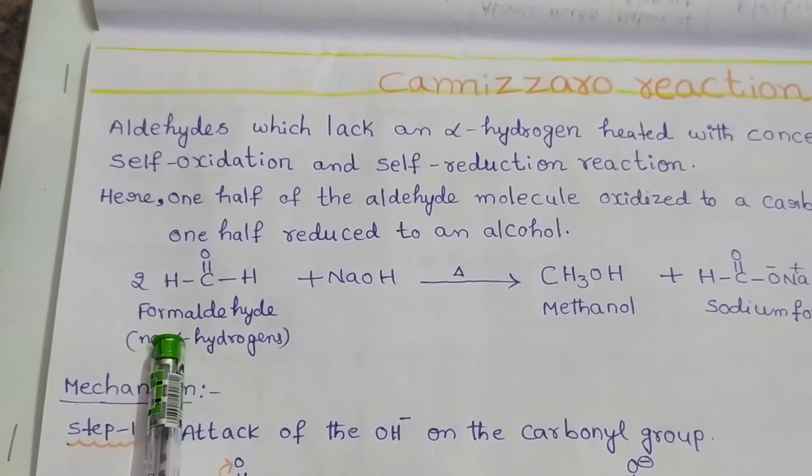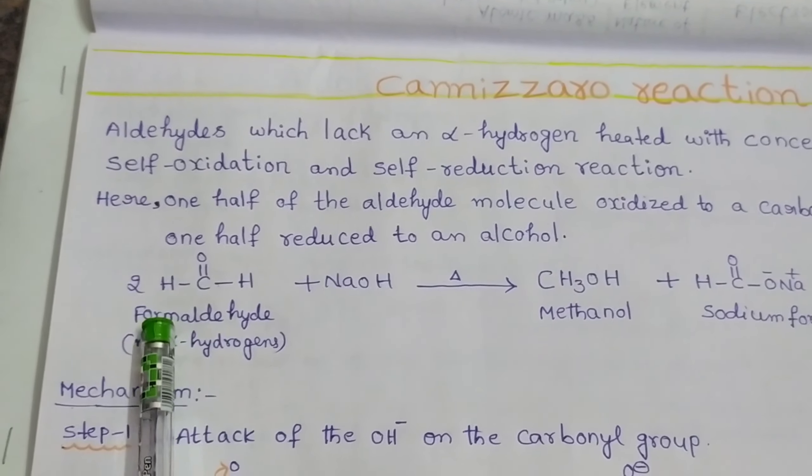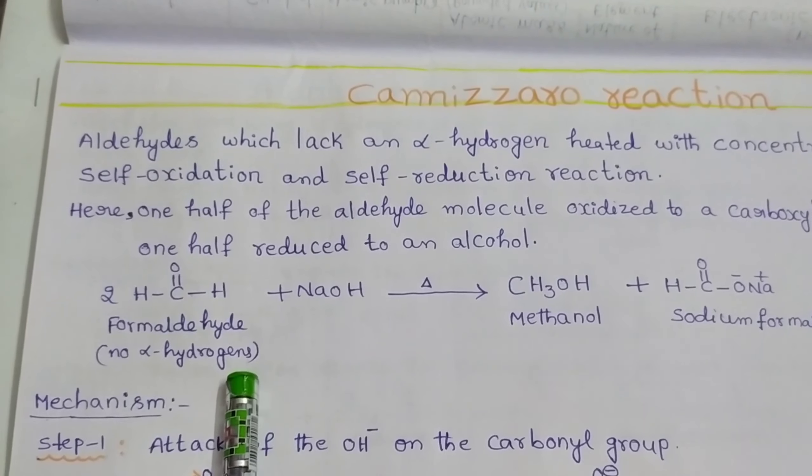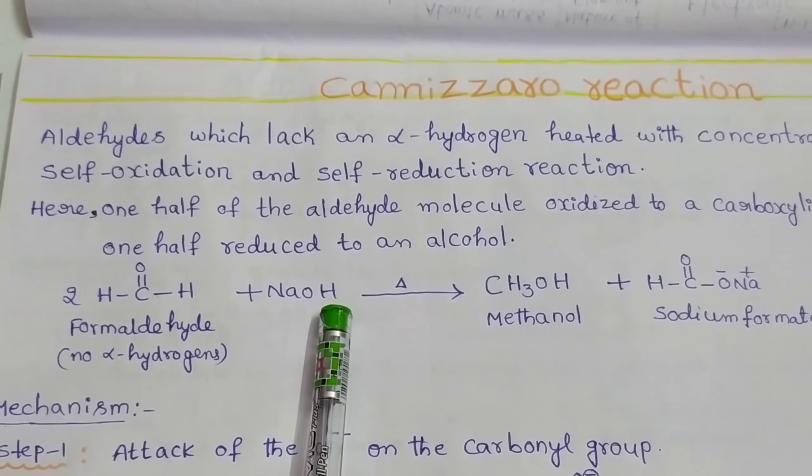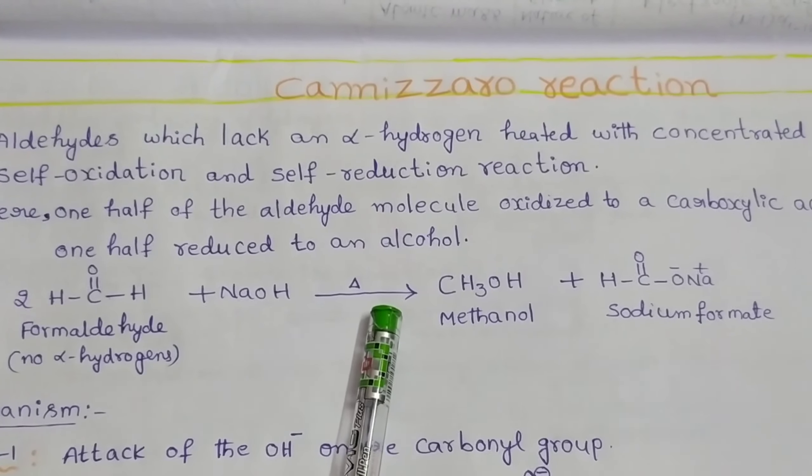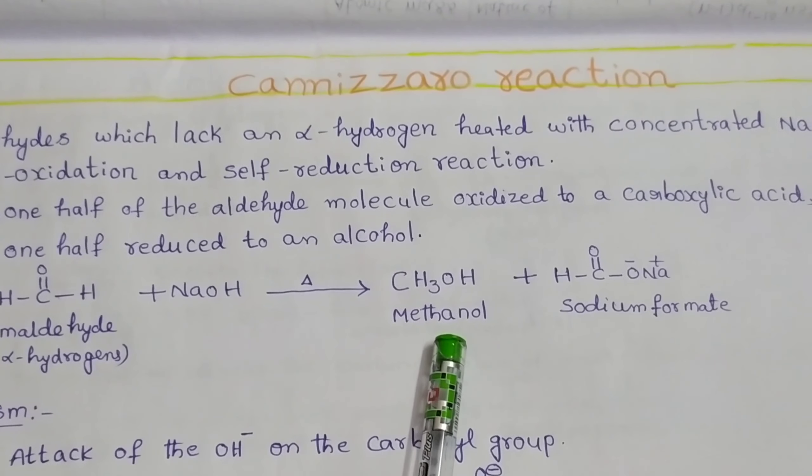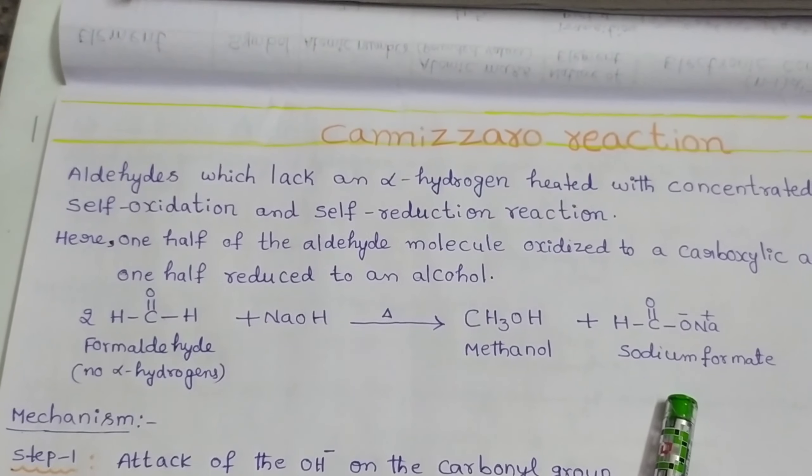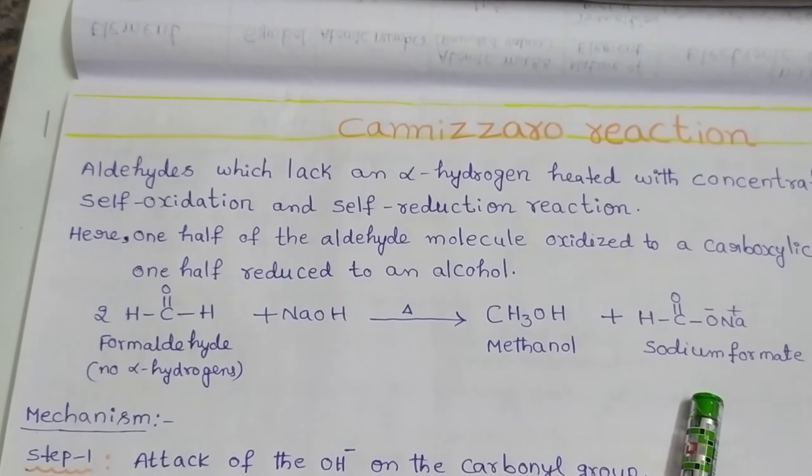For example, we can take formaldehyde. When two moles of formaldehyde, which containing no alpha hydrogens, are reacted with base like sodium hydroxide and heated, they form methanol and sodium formate as final products. This is an example for Cannizzaro reaction.